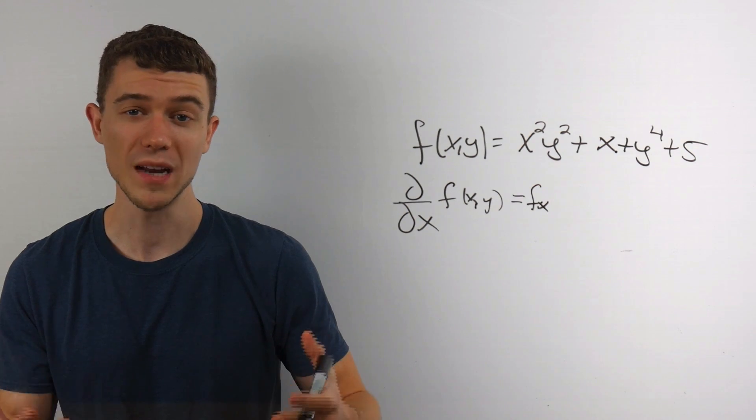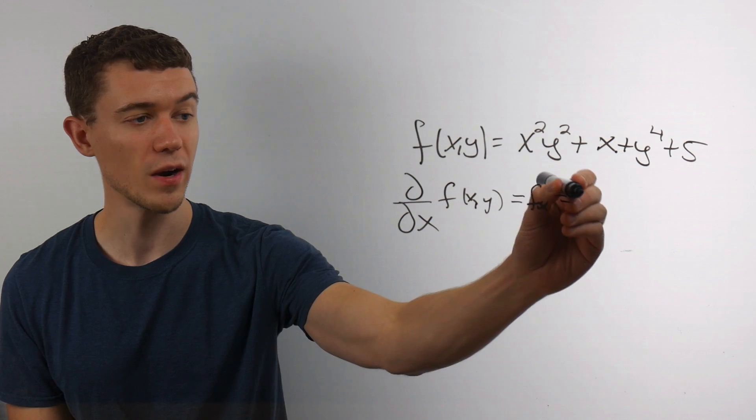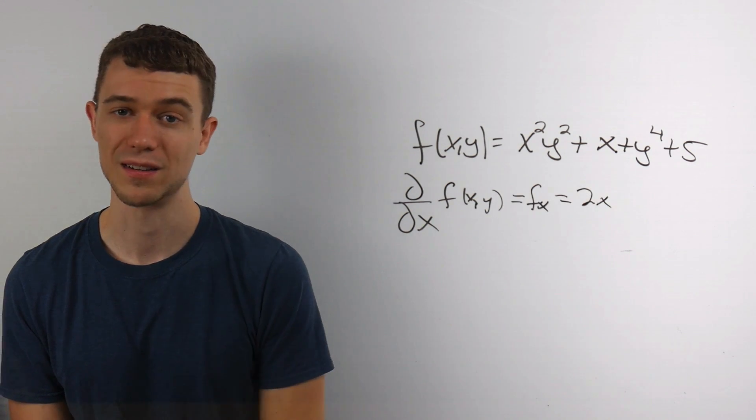But let's do it. We really just have to remember the power rule for derivatives here. What's the derivative of x squared? Well, it's 2x.